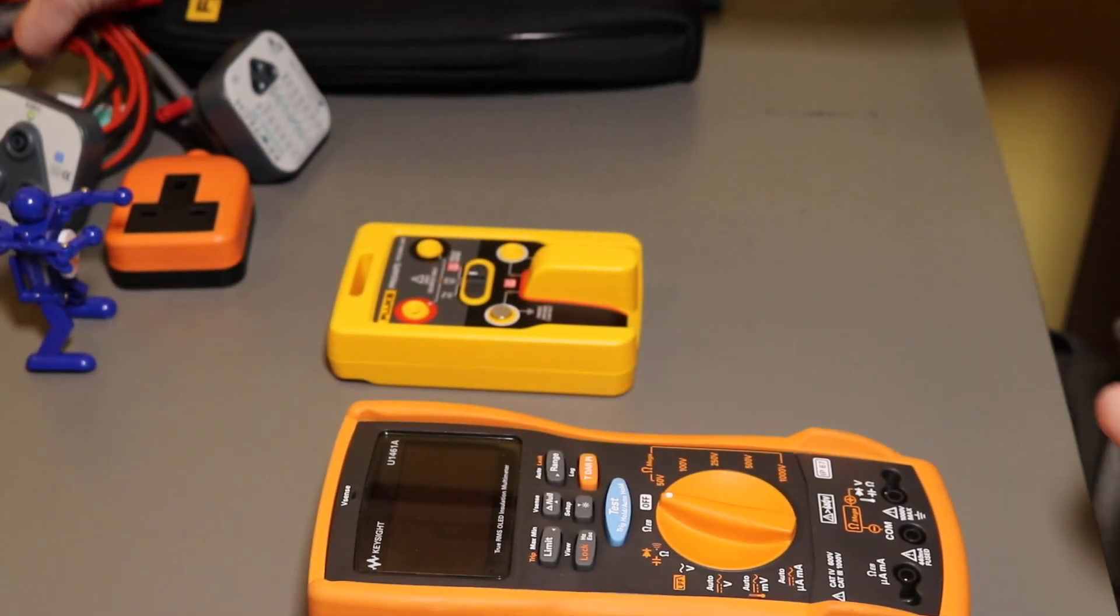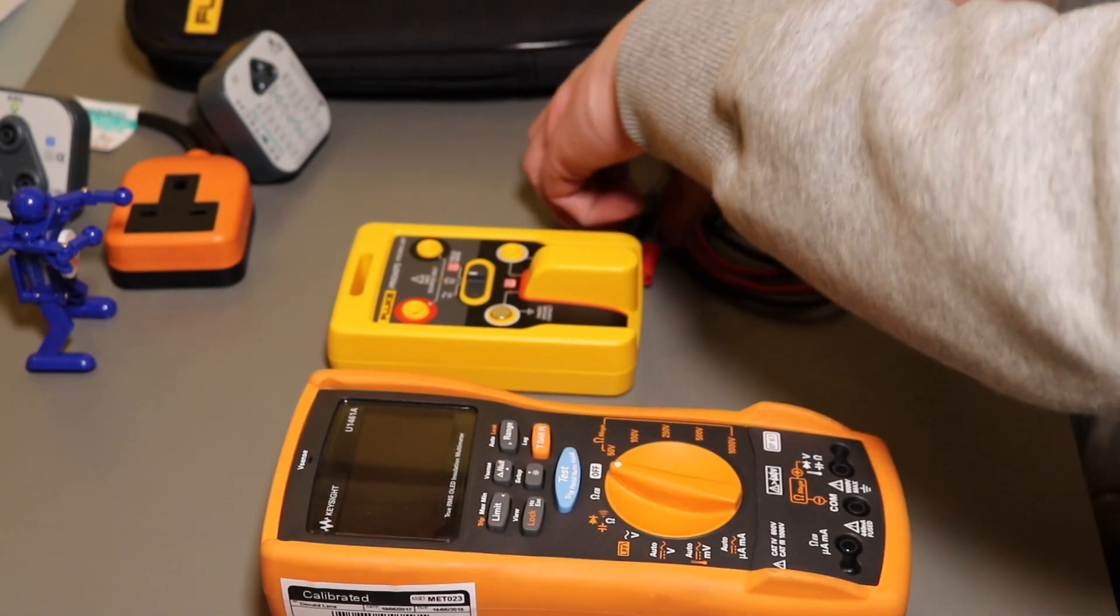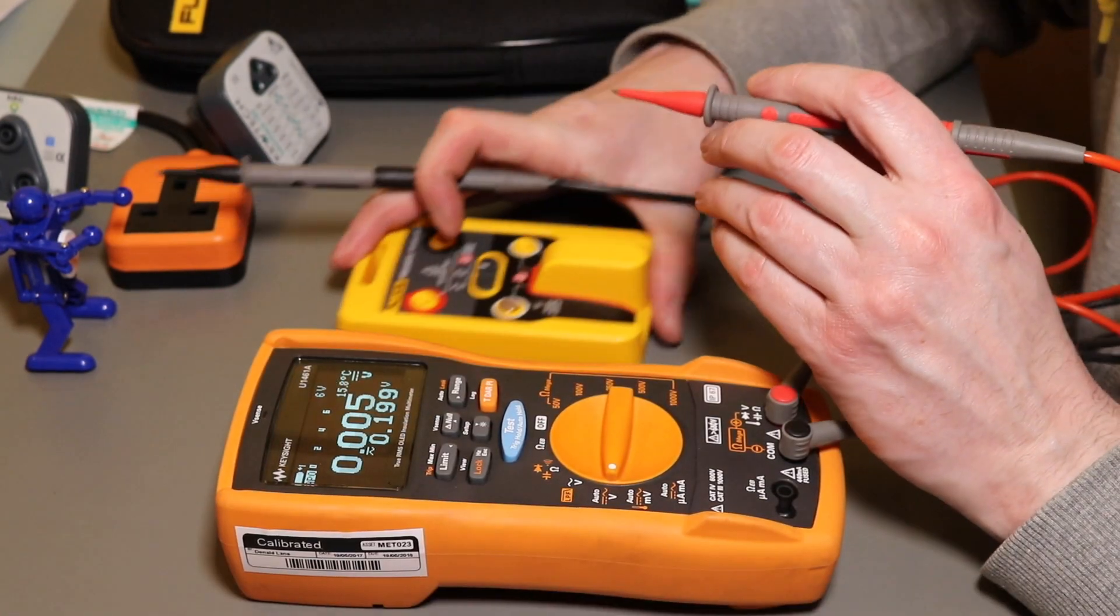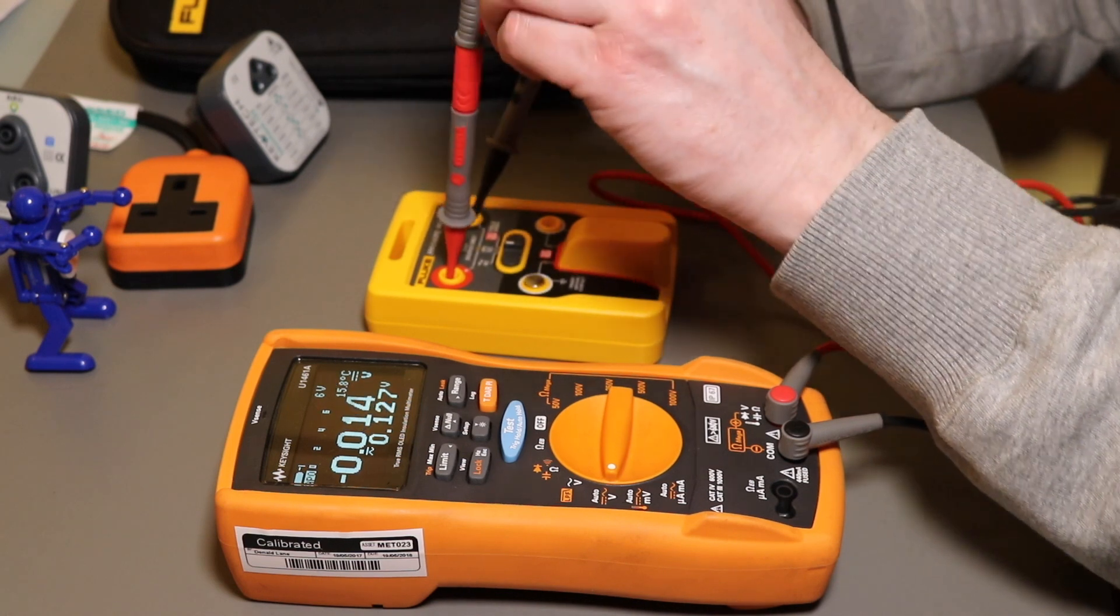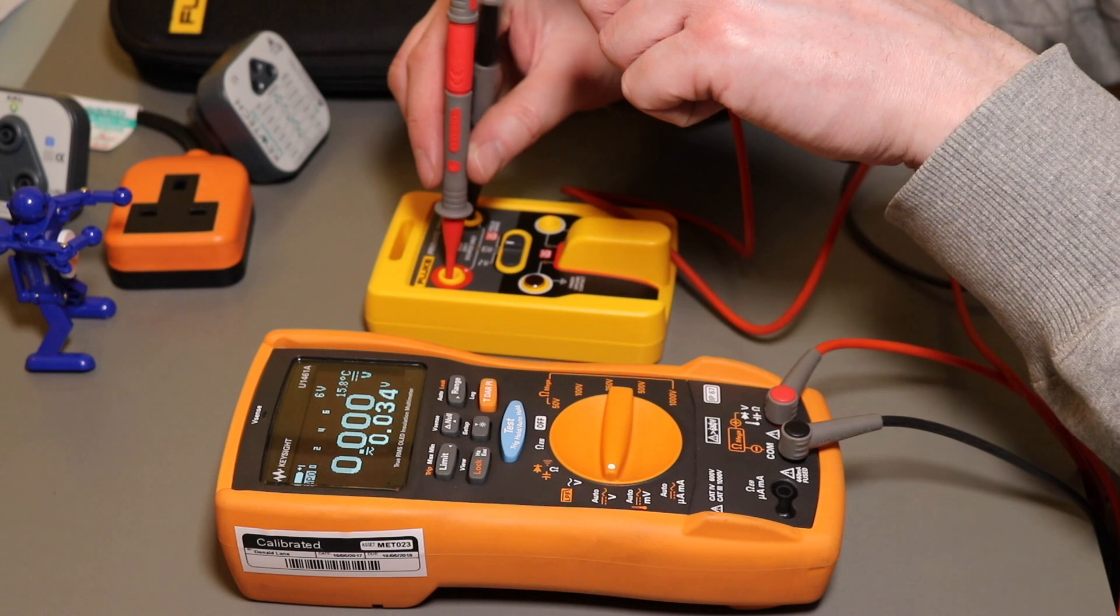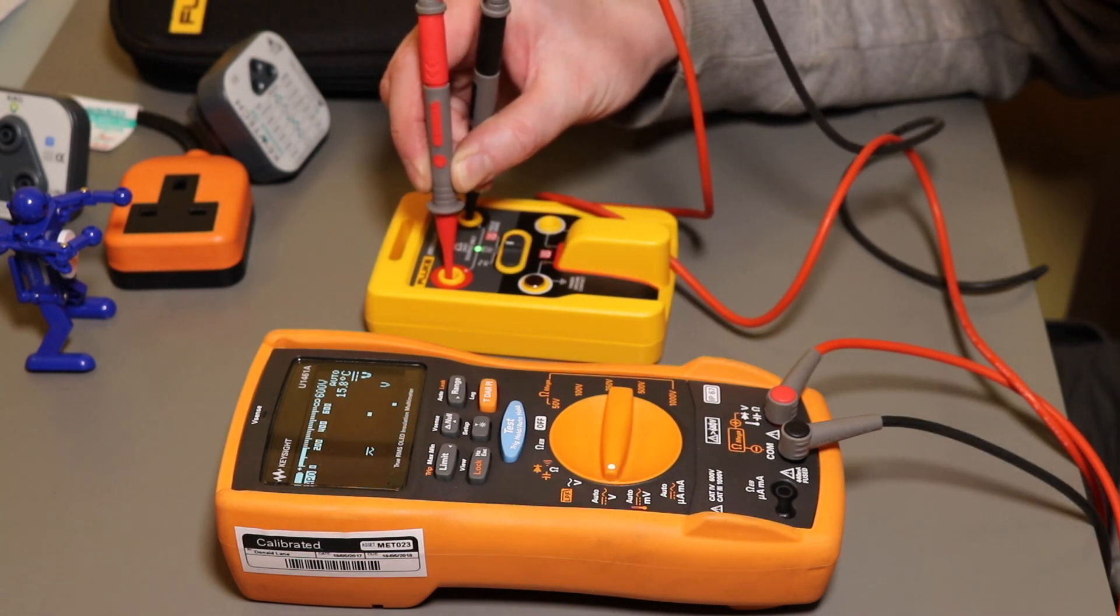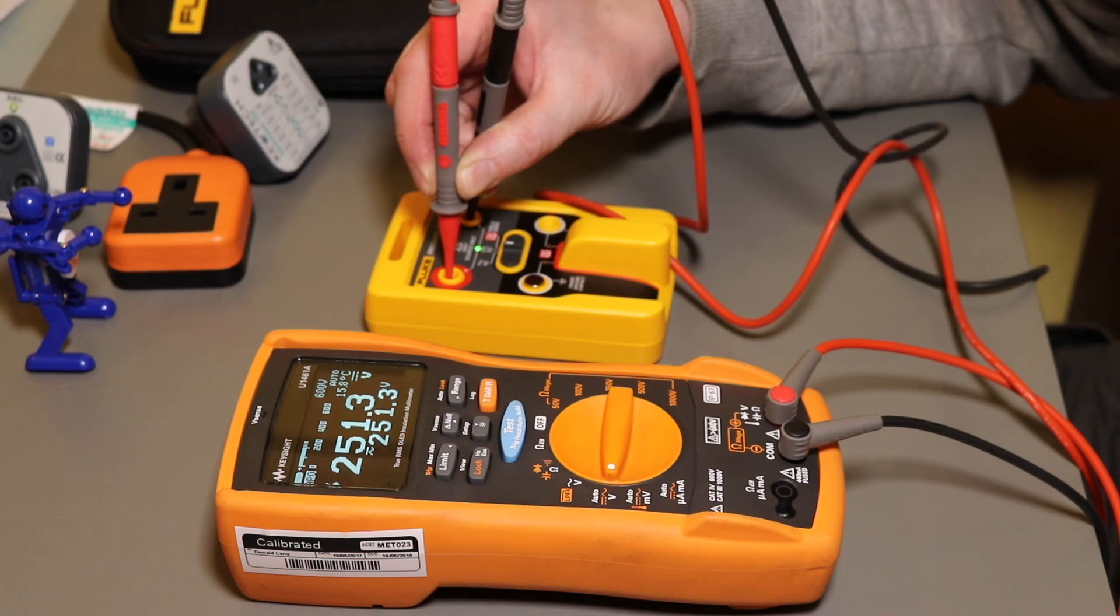So I thought what we can do is just see how good the output is. So to activate a proving unit you have to actually push down on one of these contacts to start up. The negative is a solid one. This one is actually pushed down on two. Let's see what we've got. OK, 251.3 volts DC on there.